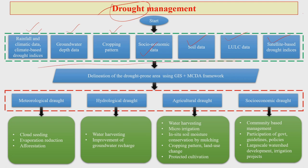When you have these sets of data with you, you actually have a treasure in your hand. On the basis of these databases, you start delineating the drought-prone area using tools like Geographic Information Systems and Multiple Criteria Decision Analysis framework. These can be carried out independently through GIS and MCDA, or you can bring these two powerful tools together for better decision-making based on your available alternatives for drought management.